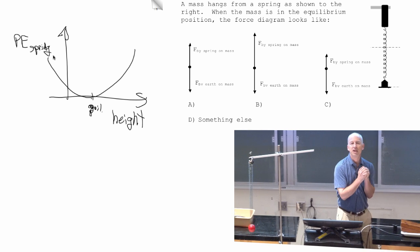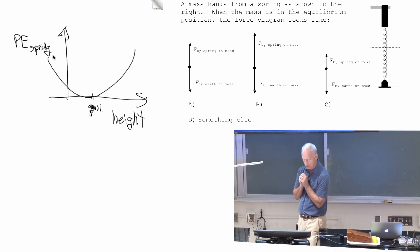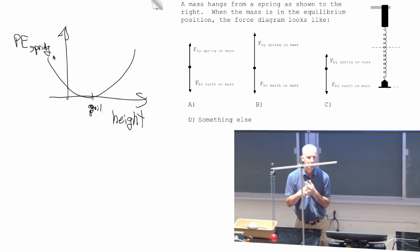The slope of that tells you the force. Here's the mass spring potential energy. So what's the slope at the equilibrium point?